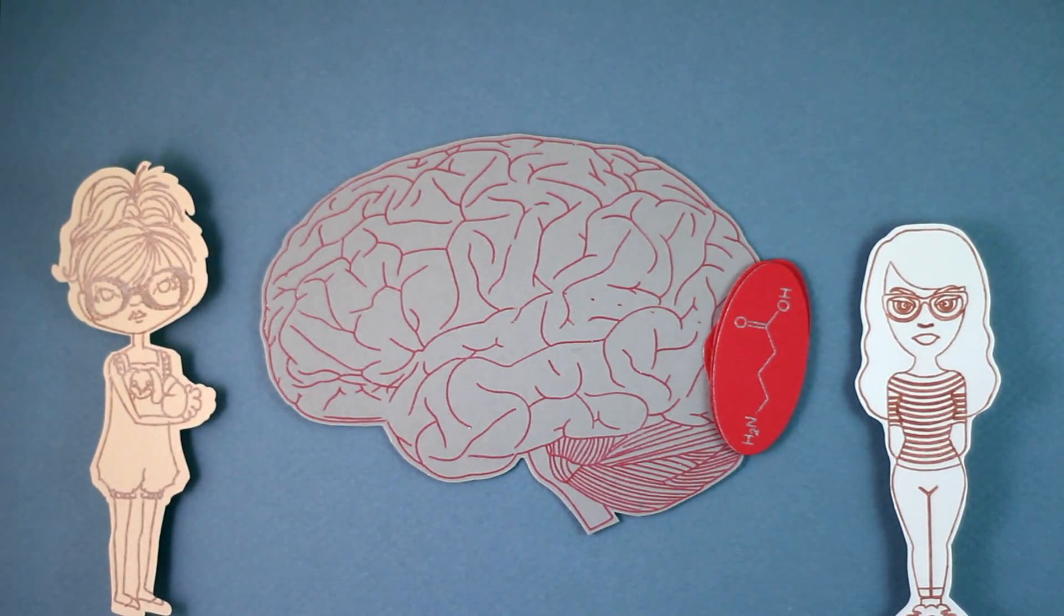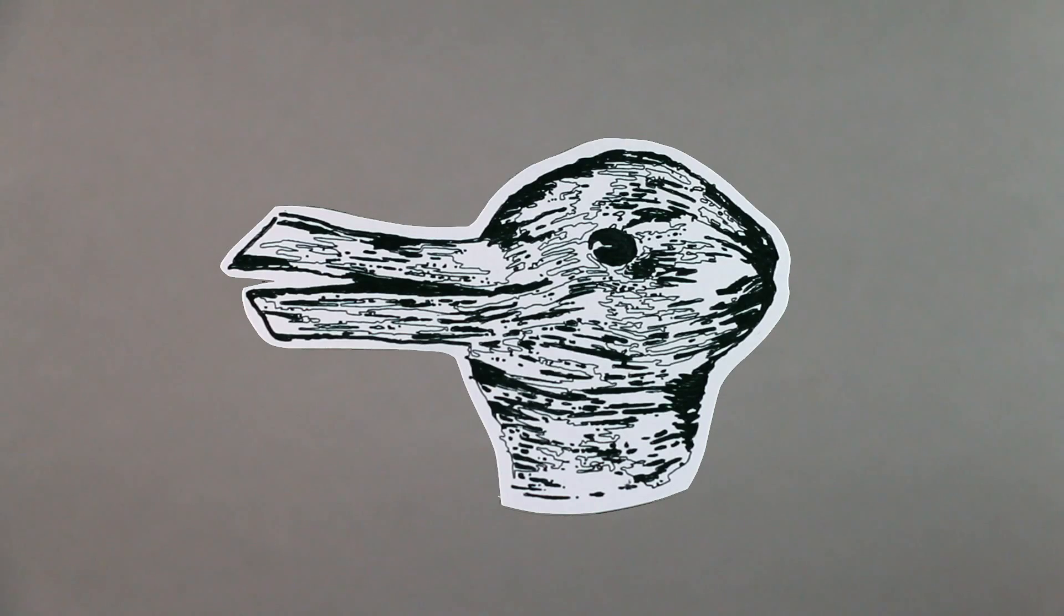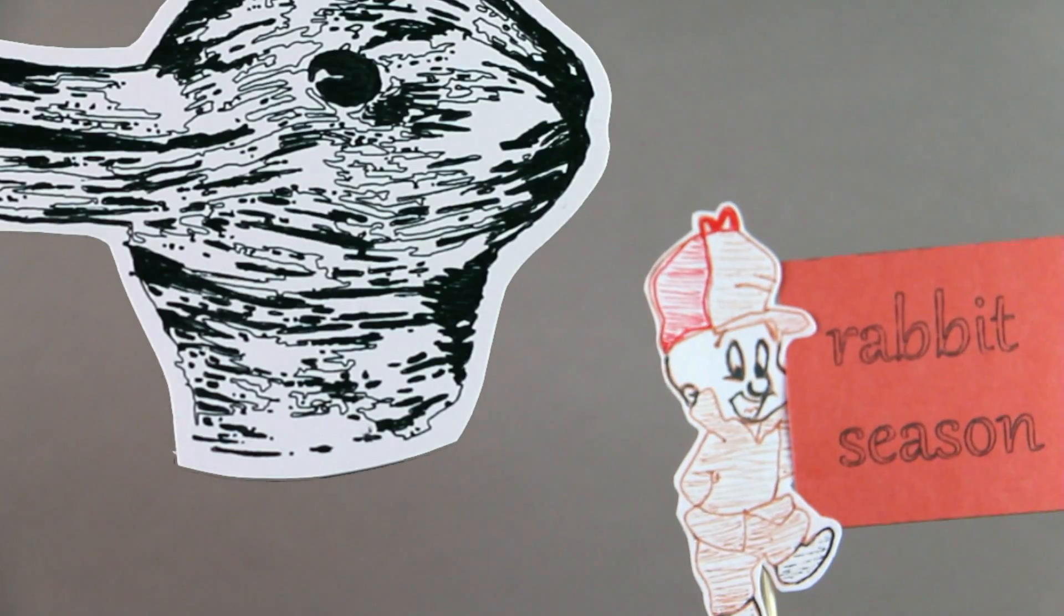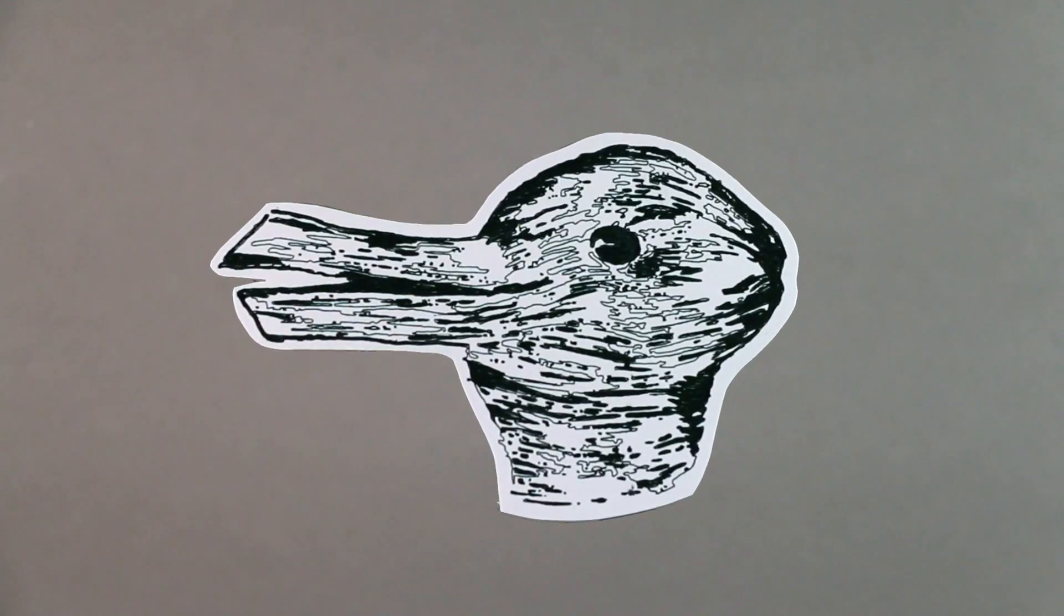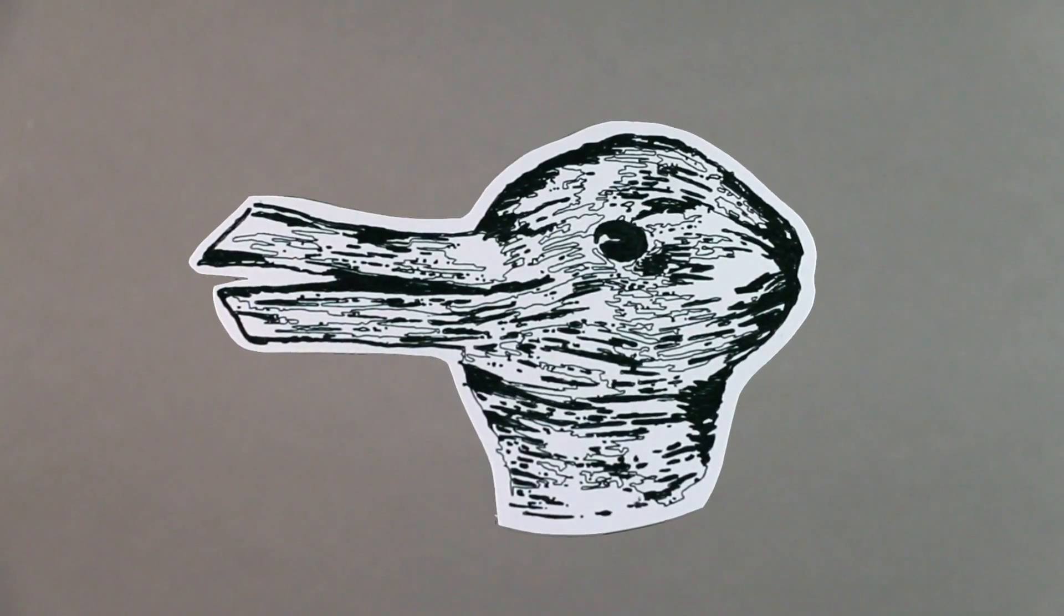Things we see can be constructed in many different ways. When children were shown the duck-rabbit illusion on Easter Sunday, rabbit season, more children see the rabbit, where on other Sundays they are more likely to see the duck, maybe duck season.